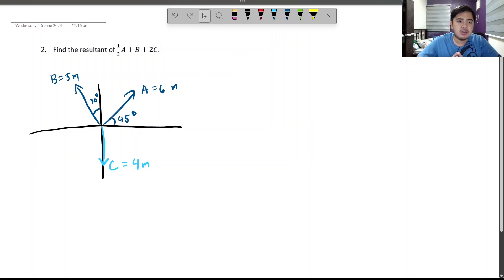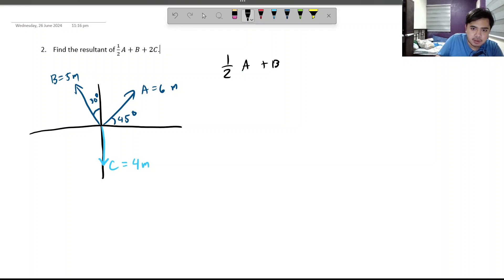For our next question, we have to find the resultant of 1.5A plus B plus 2C. Given that A is 6 meters 45 degrees north of east, B is 5 meters 30 degrees east of north, and C is 4 meters going south. Now, it is given that we need to find 1.5A plus B plus 2C. We have to multiply A by 1.5. We have to multiply C by 2. What does that exactly mean? Well, that only means that we have to multiply the magnitudes of A by 1.5. So, 6 meters times 1.5, we know that to be 9 meters. And 2 times 4 meters, that's going to be 8 meters.